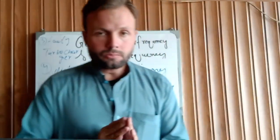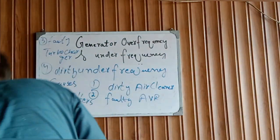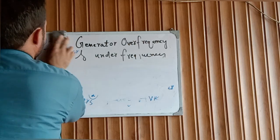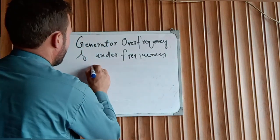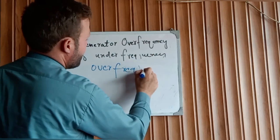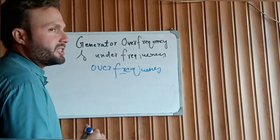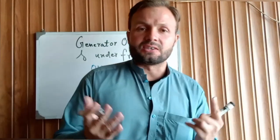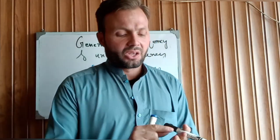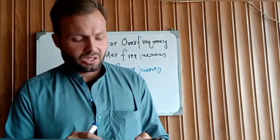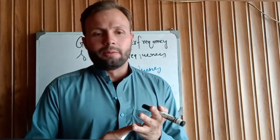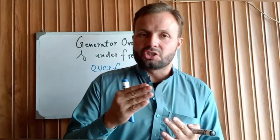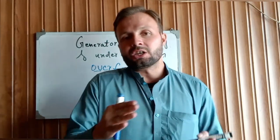Now let's talk about over frequency. Over frequency means your engine speed is higher than the rated RPM. Most of the time, a faulty governor causes the frequency of the alternator to fluctuate. The governor accelerates the engine too much, the generator speed increases, the frequency increases, and the generator goes to over frequency.